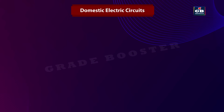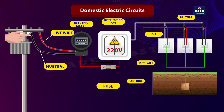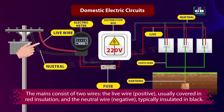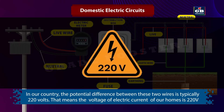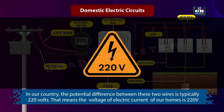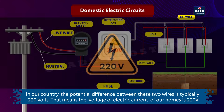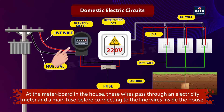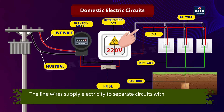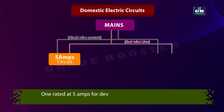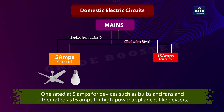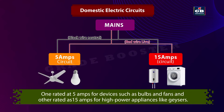Domestic Electric Circuits. Electricity is supplied to our homes through the mains, which consist of two wires: the live wire (positive), usually covered in red insulation, and the neutral wire (negative), typically insulated in black. In our country, the potential difference between the two wires is 220 volts. At the meter board, these wires pass through an electricity meter and a main fuse before connecting to line wires inside the house, which supply electricity to separate circuits — one rated 5 amps for bulbs and fans, and another rated 15 amps for high-power appliances like geysers.